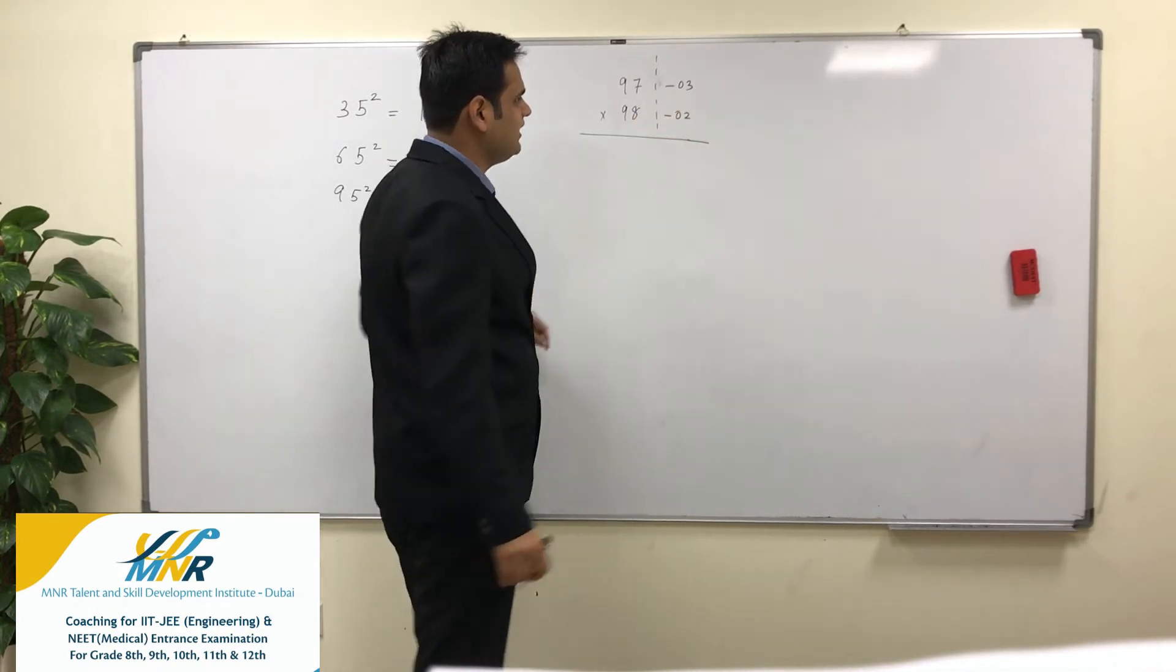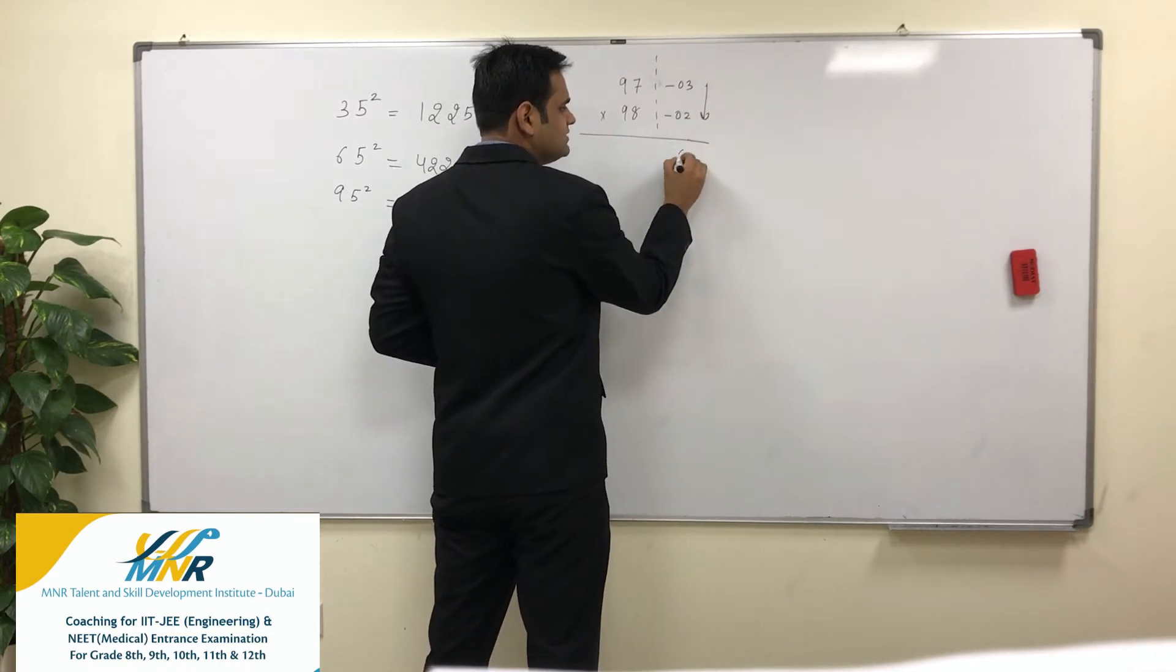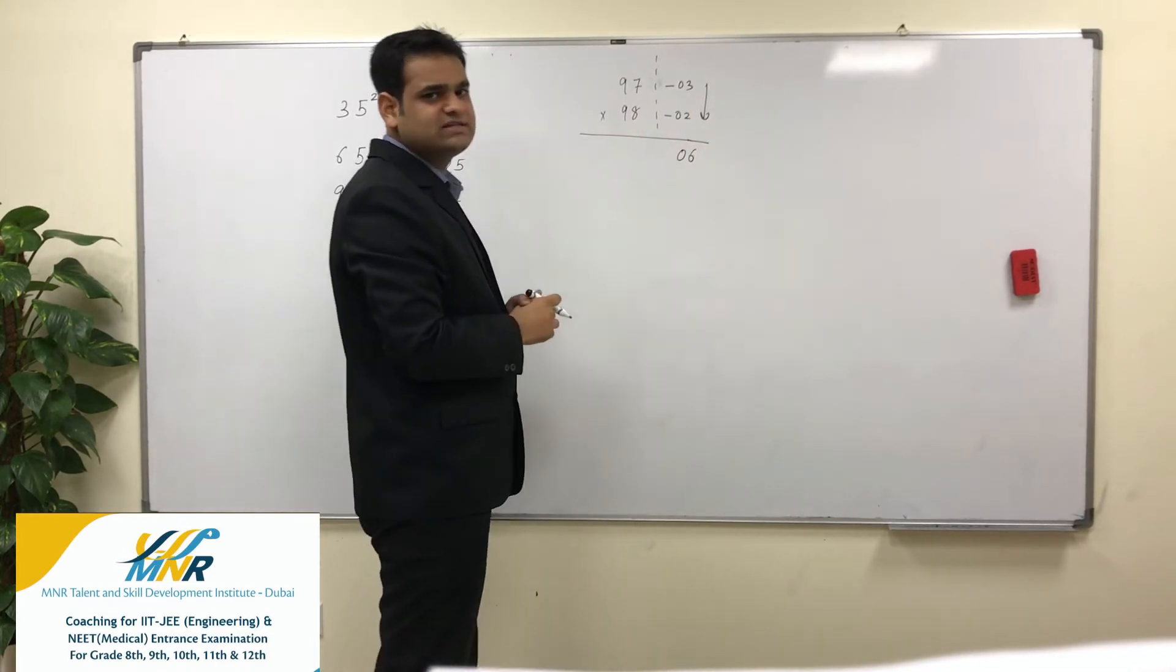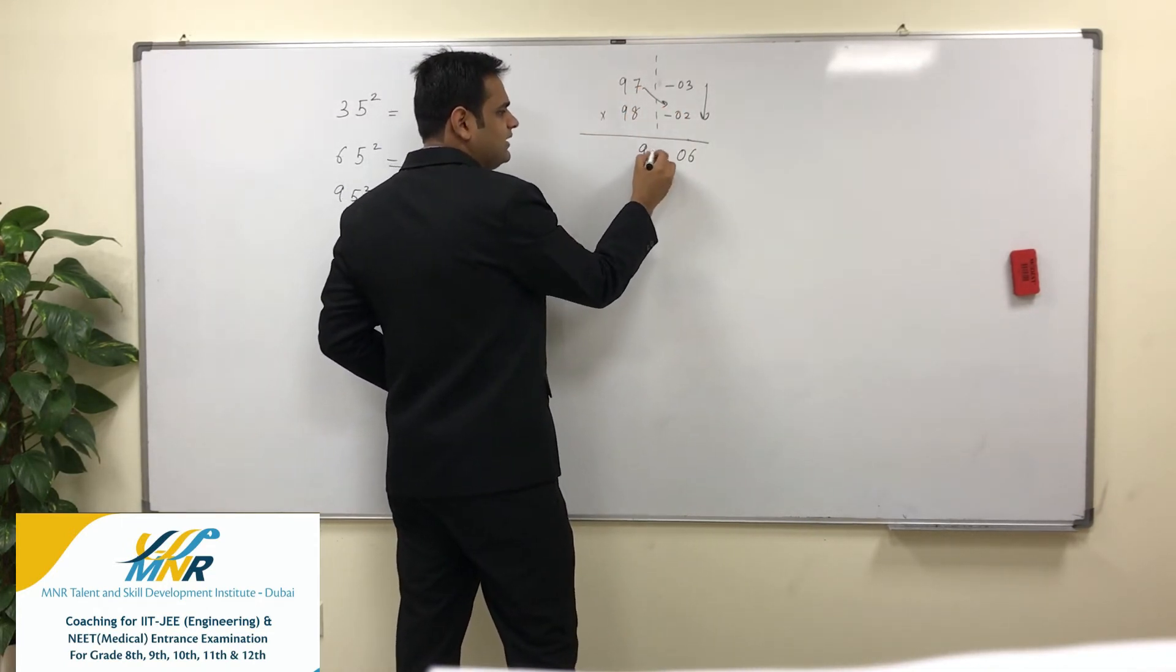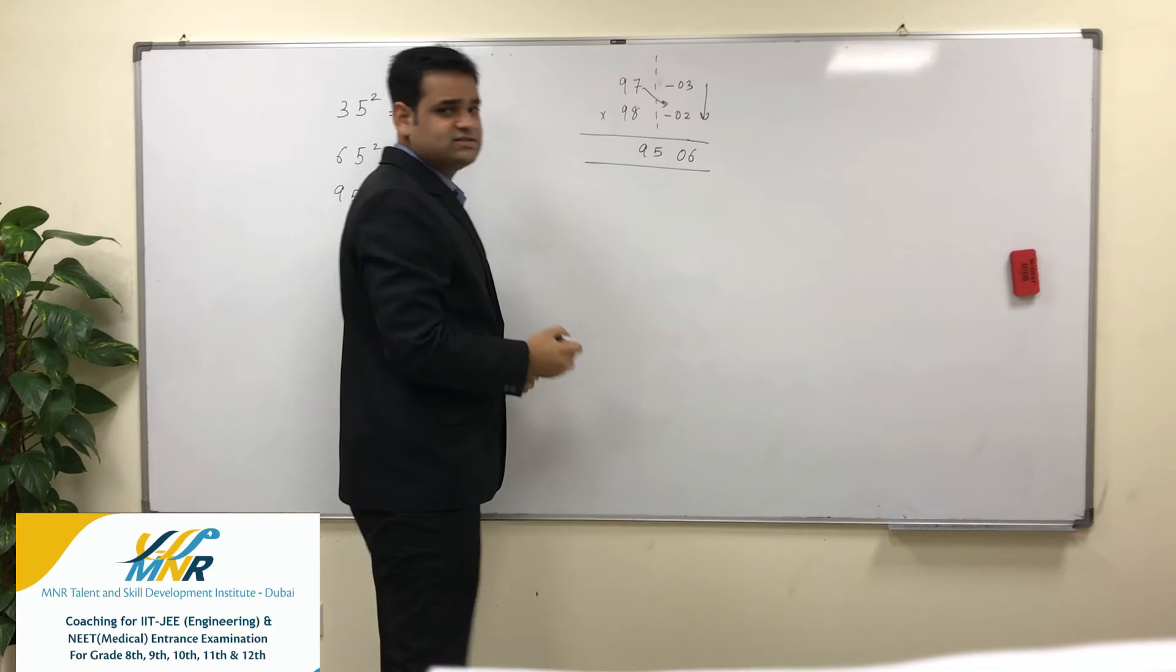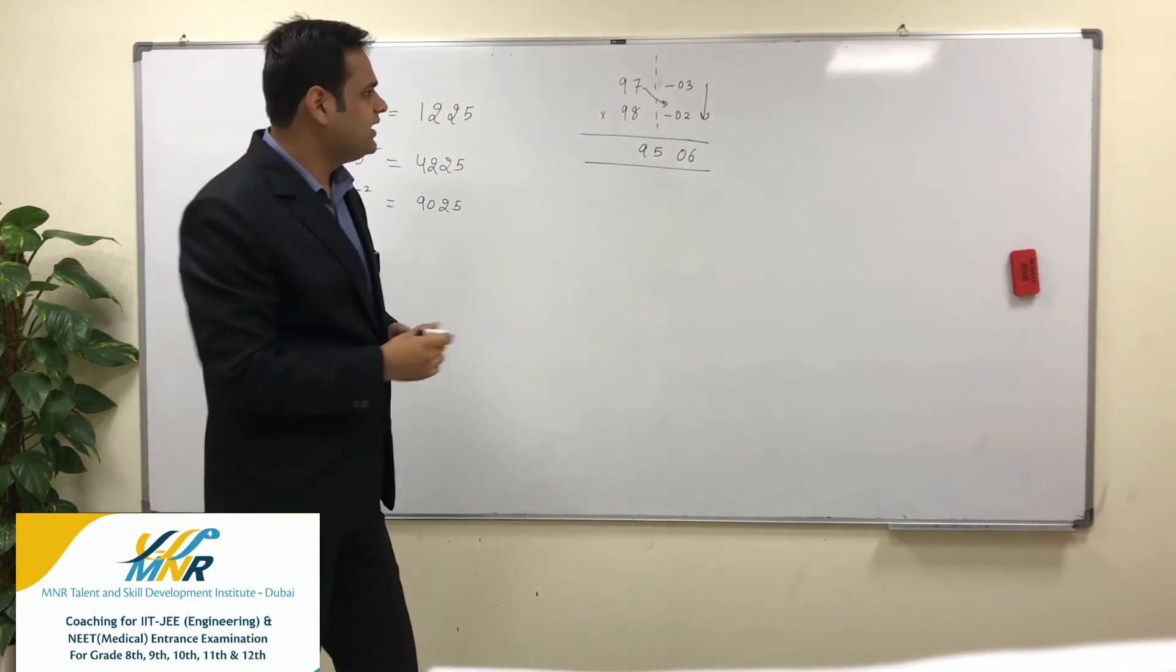That's 06. Then add diagonally: 97 minus 2 will be nothing but 95, and that's my answer.